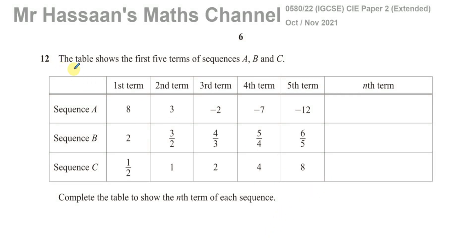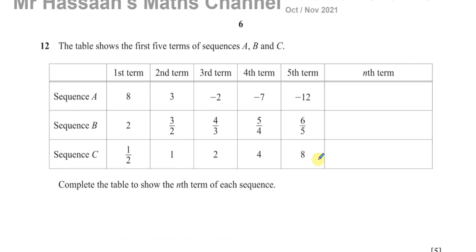Welcome back, this is Mr. Hassan's Maths Channel. I'm now answering question number 12 from the October/November 2021 International GCSE Cambridge Paper 2, Variant 2. This question is about sequences. The table shows the first five terms of sequences A, B, and C. Complete the table to show the nth term of each sequence.